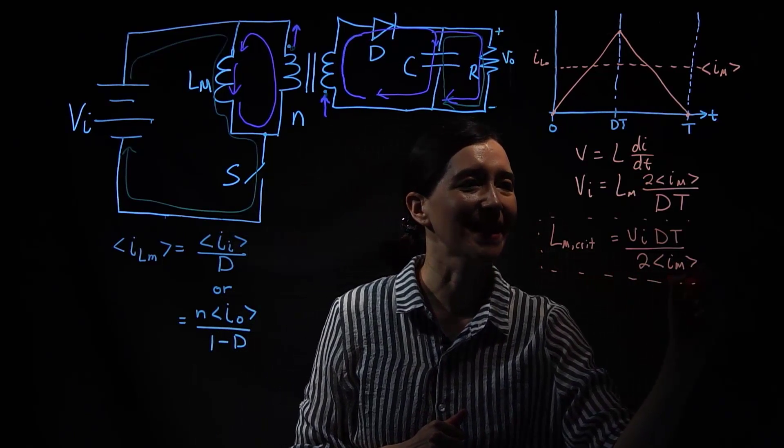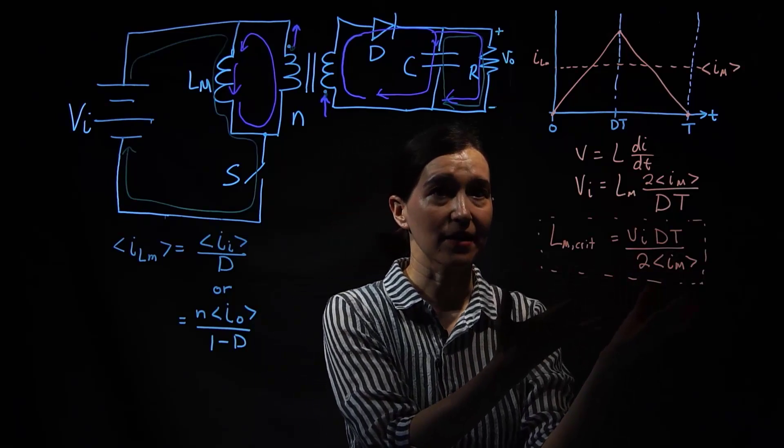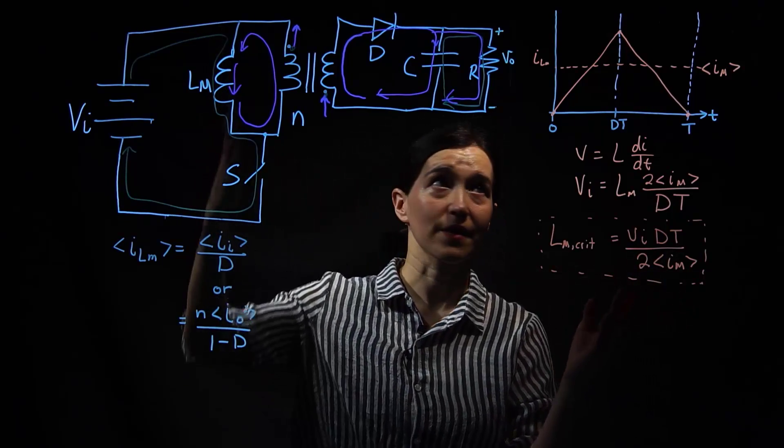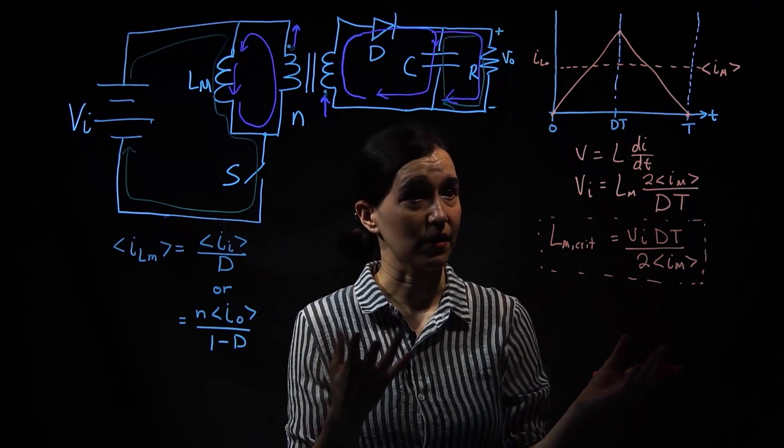I'm going to move this around so dt and then we're going to be dividing by two average Im here. This is the intermediate equation. If you know your average magnetizing inductance seen from this side, this value, then you can plug it in here and you can get your critical inductance value here.